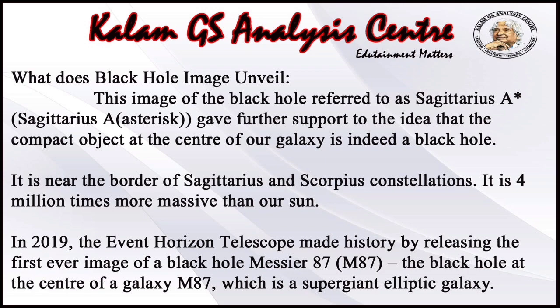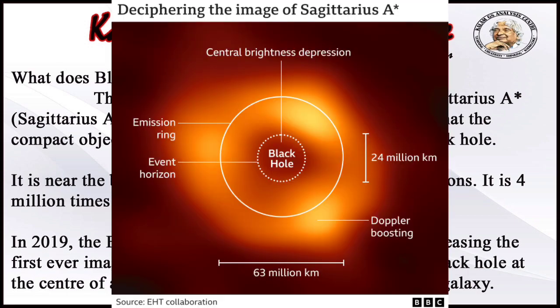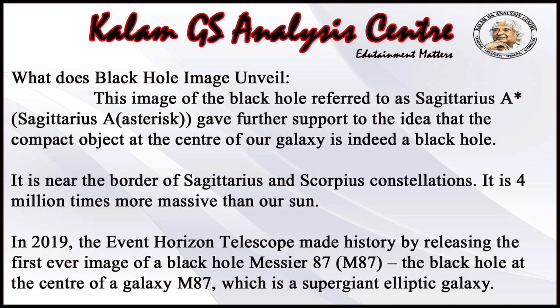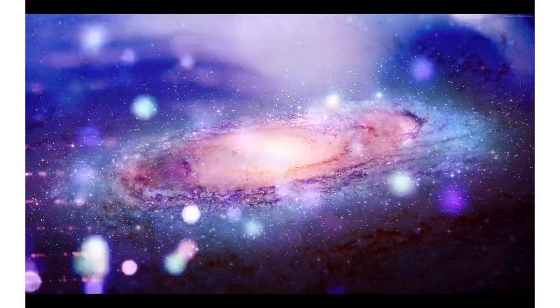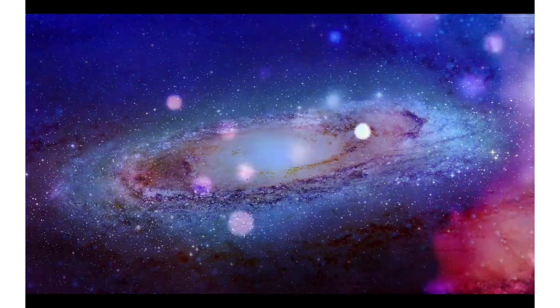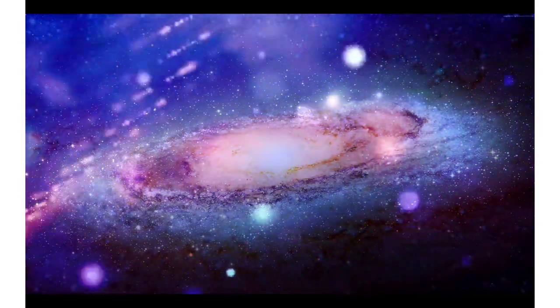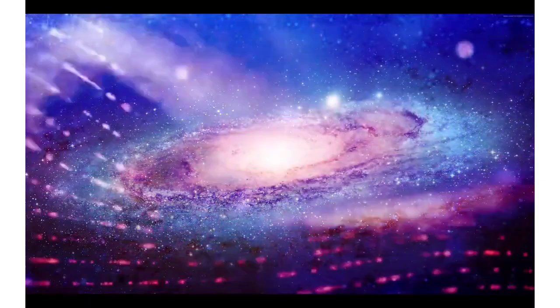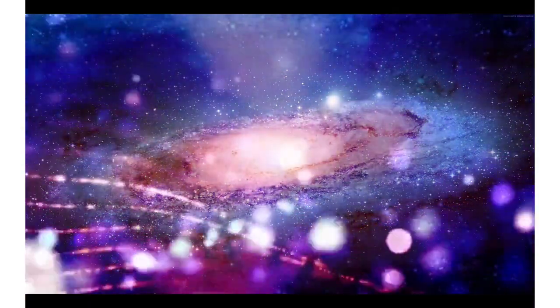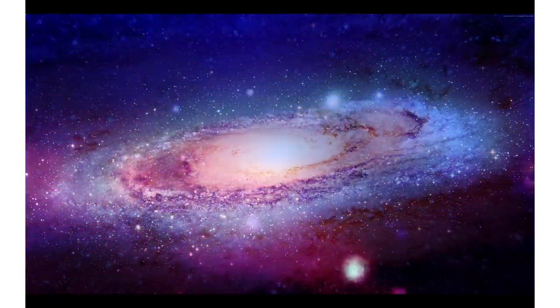Black Hole की इस छवी को referred किया गया है as Sagittarius A Star, जिसने इस विचार को और समर्थन दिया कि हमारे Milky Way Galaxy के core में जो compact object है वो वास्तव में एक Black Hole है। ये Sagittarius और Scorpius constellation की सीमा के निकट है। ये हमारे sun से 4 million गुना अधिक विशाल है। ये Einstein के General Theory of Relativity के सिद्धांत को मजबूत करता है कि अंतरिक्ष में एक point जहां matters इतना संकुचित होता है कि एक gravitational field बनता है जिससे प्रकाश भी नहीं बच सकता।